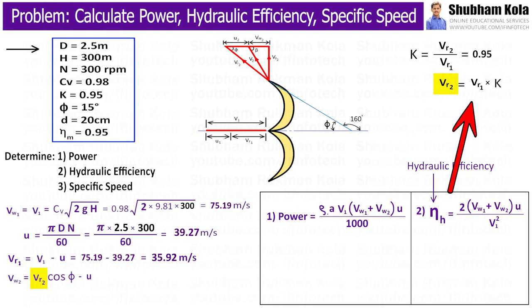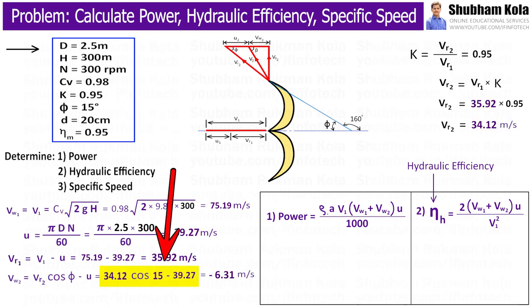And Vr2 equal to Vr1 multiplied by friction coefficient for vanes, capital K, given in the problem. Therefore, by putting all these calculated values, I will get Vw2 as minus 6.31 m per second.